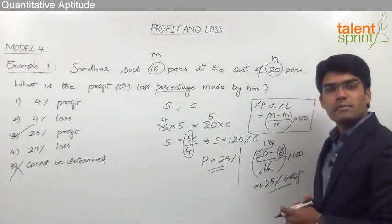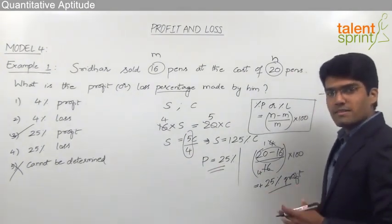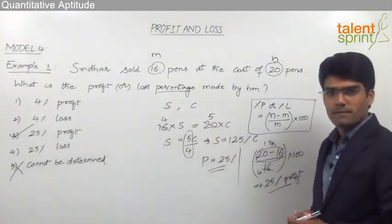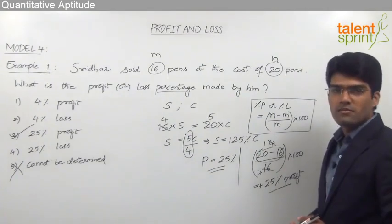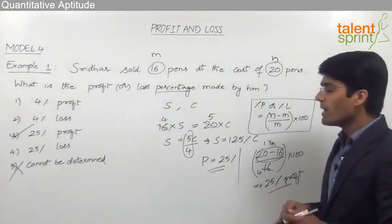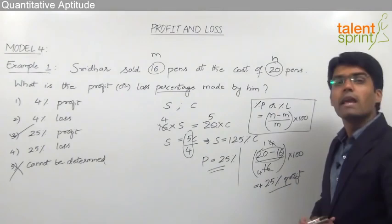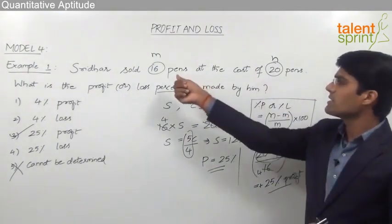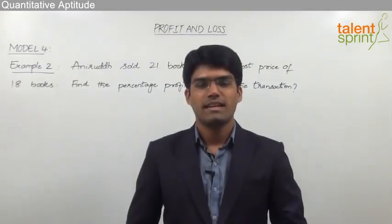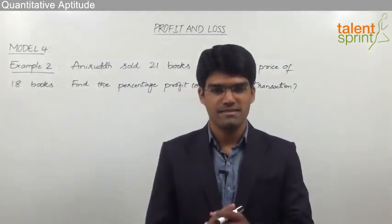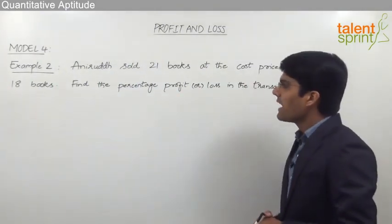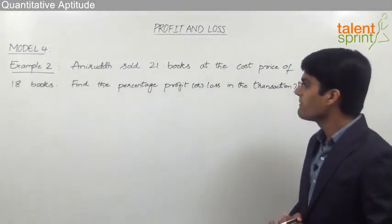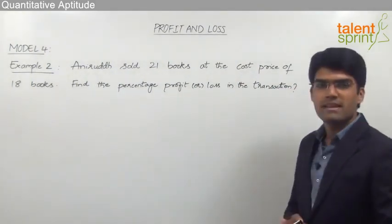So it is clear that you can solve such questions either by finding the relationship between selling price and cost price and then expressing it as a percentage profit or loss, or by using the formula (N − M) / M × 100, where N is the quantity associated with cost and M is the quantity associated with the selling price. Let us now take one more example: Anirudh sold 21 books at the cost price of 18 books. Find the percentage profit or loss in this transaction.